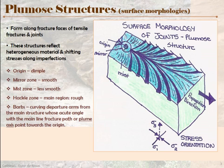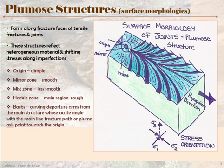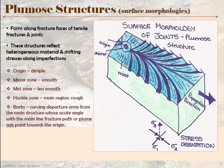Right outside of your origin, you have a little mirror zone — a very smooth zone, because right there when the stress is high, you get something close to a planar surface. As you move out, we call this the mist zone, and it becomes less smooth — you start to see a roughness. This represents the fracture face becoming imperfect, because as the stress travels along the material, it experiences little differences in the strength and composition of the rock. The main body of our plumose structure, which is usually kind of feather-shaped, we call the hackle zone.